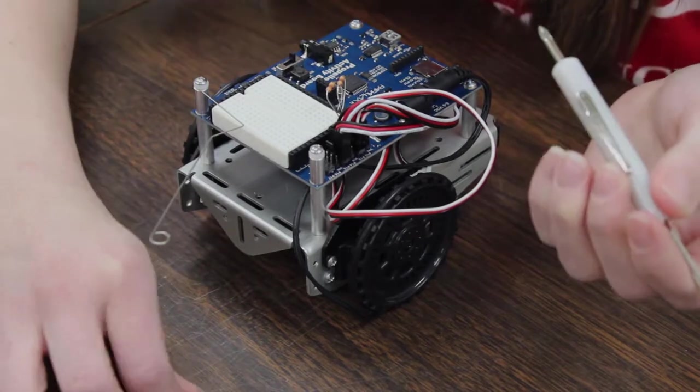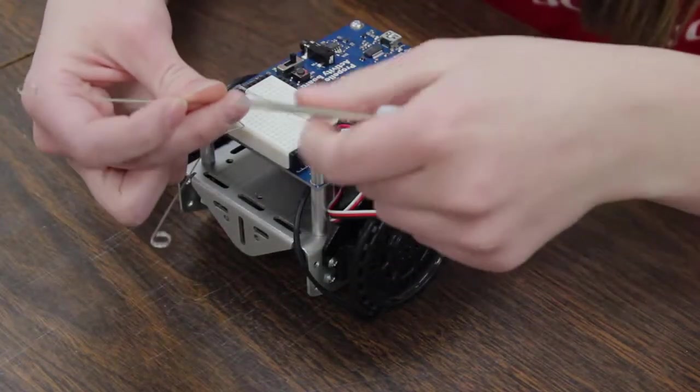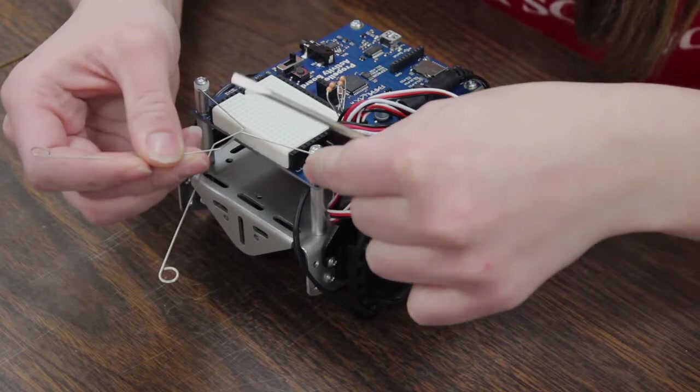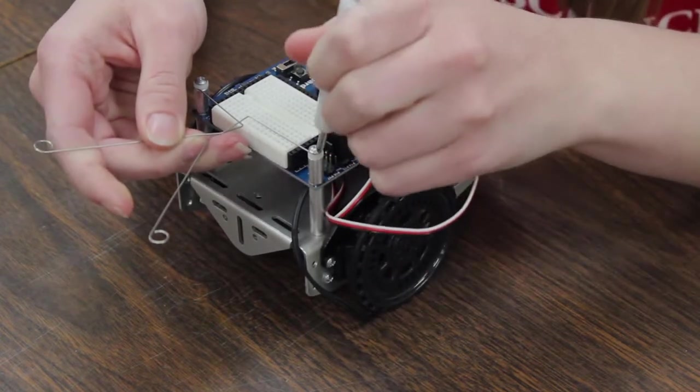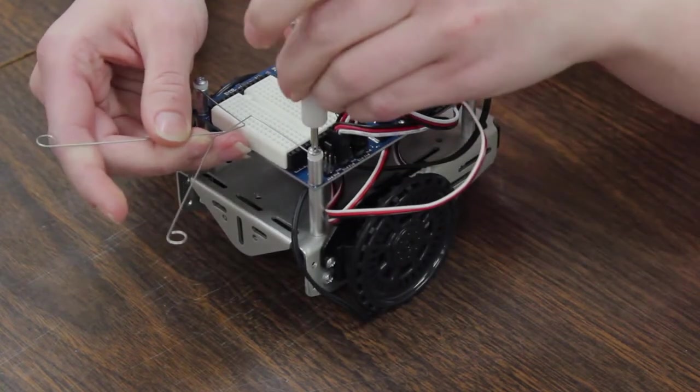Do the same thing with the other one, but this one goes on top of the washer. So slide that in on top, screw that screw back into place.